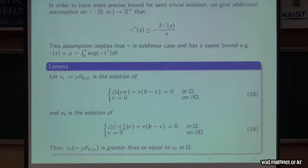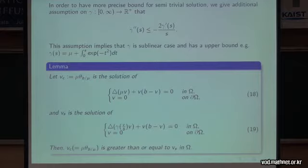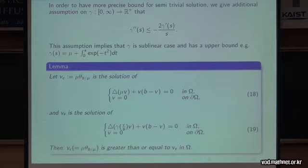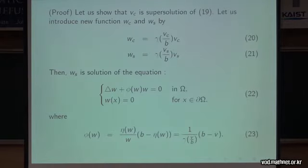In order to get a more precise bound for the semi-trivial solution, we give an additional assumption on gamma: gamma-double-prime of s is less than 2 times gamma-prime divided by s. This assumption implies that gamma is sublinear — like concave — and has an upper bound. For example, gamma of s can be this function. Since this integral is finite, gamma has an upper bound. Under this assumption, we can show that the classical solution Vc is always greater than or equal to Vs, the solution of the corresponding equation. This result follows from the comparison principle.